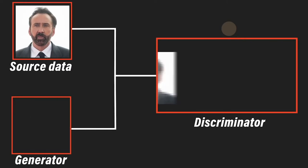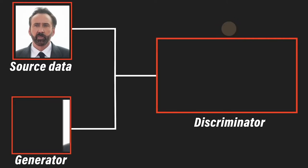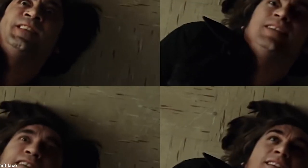A second AI algorithm called a decoder is then taught to recover the faces from the compressed images. Because the faces are different, the maker trains one decoder to recover the first person's face and another decoder to recover the second person's face.